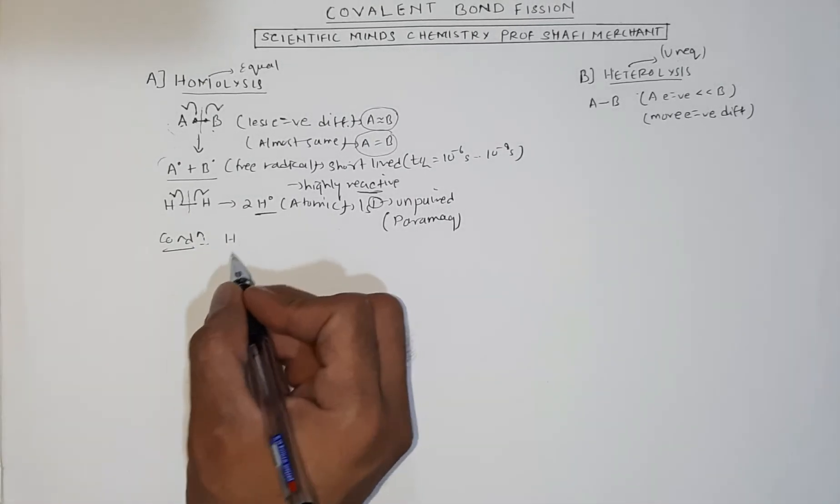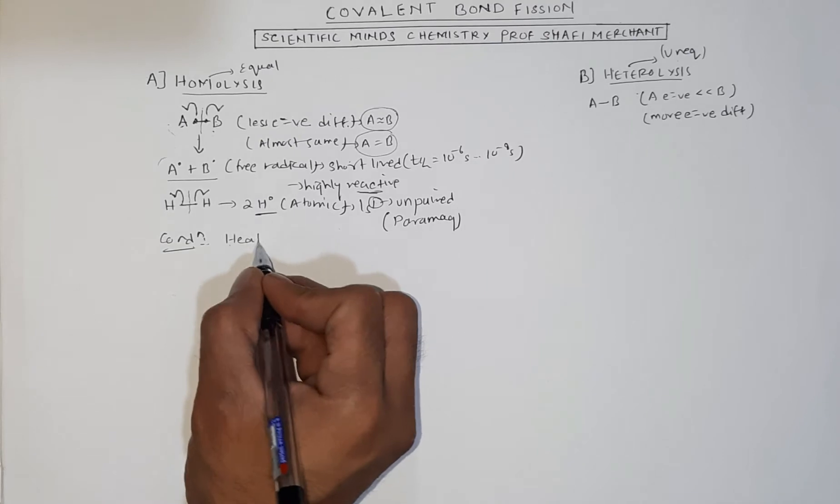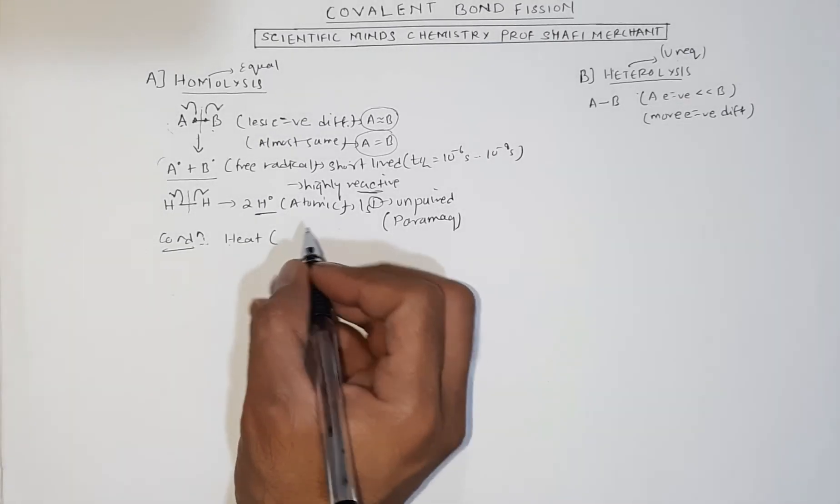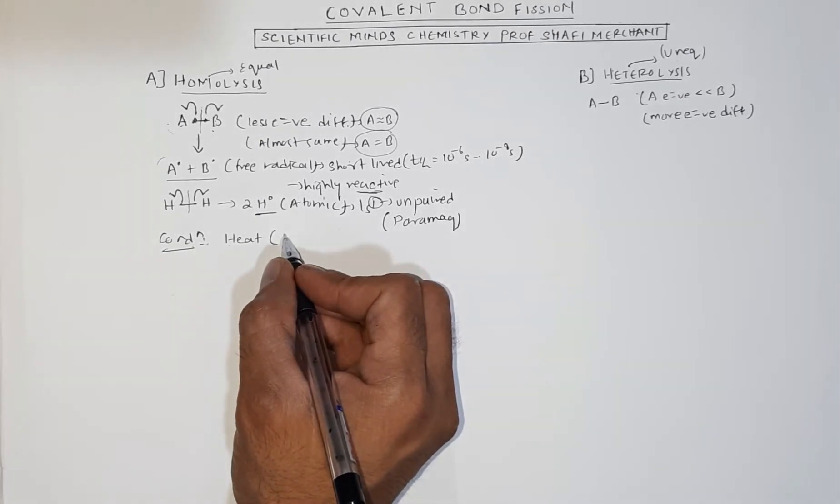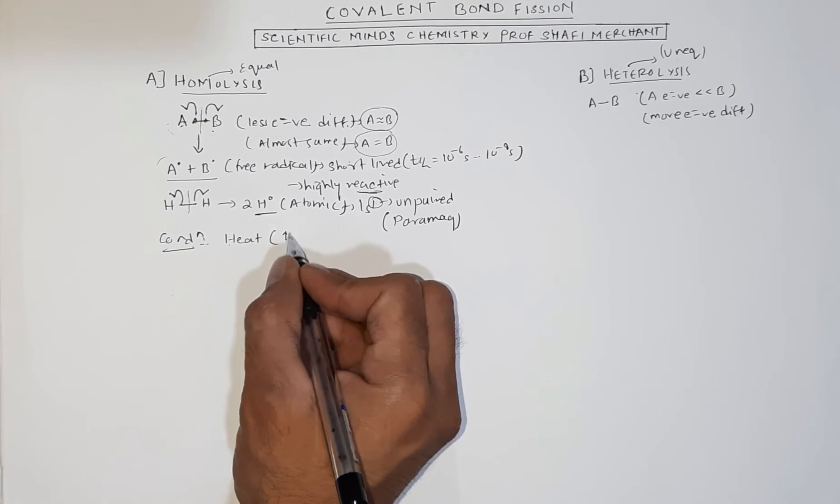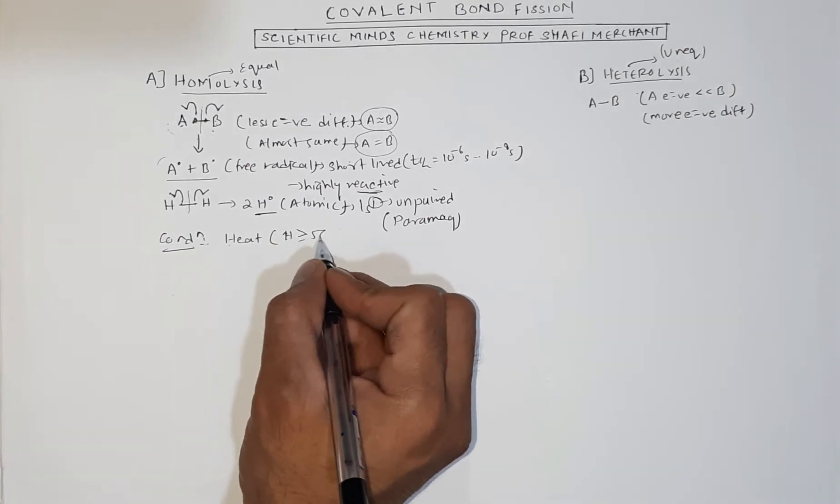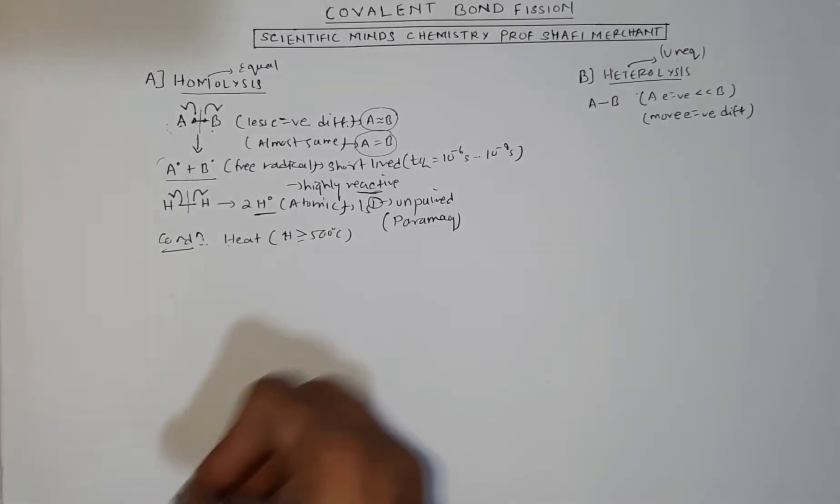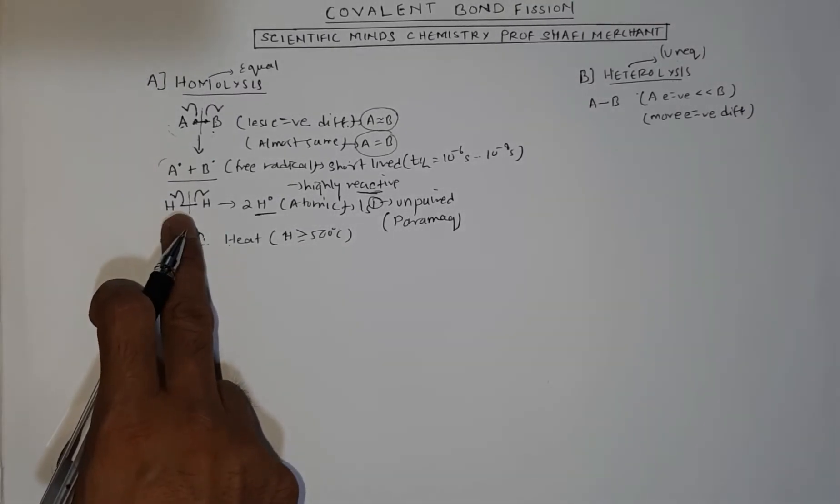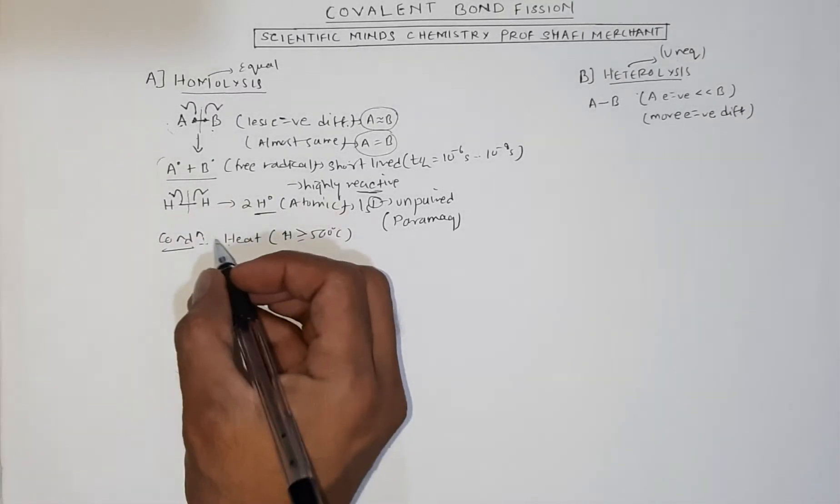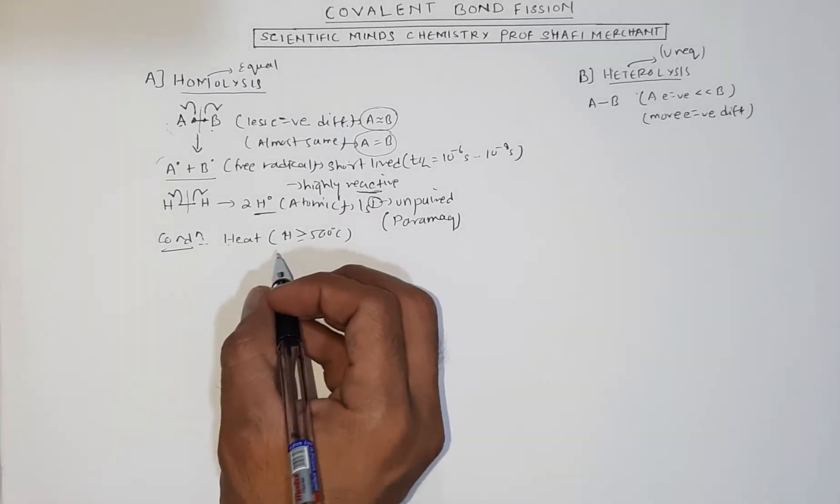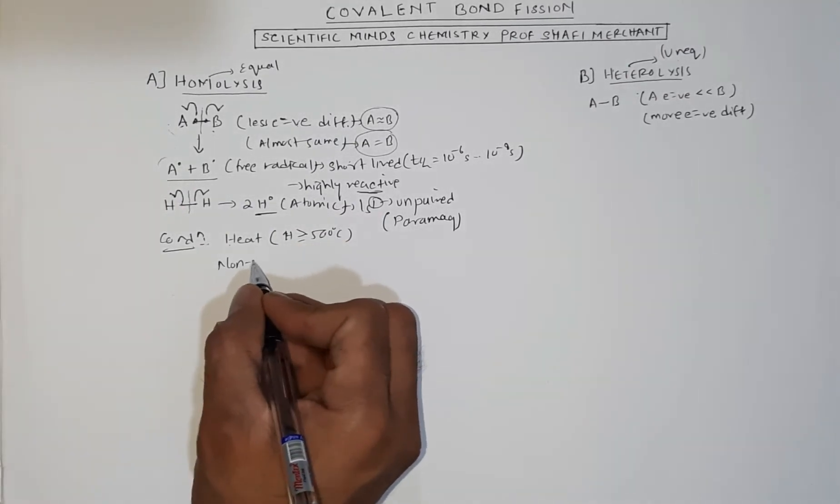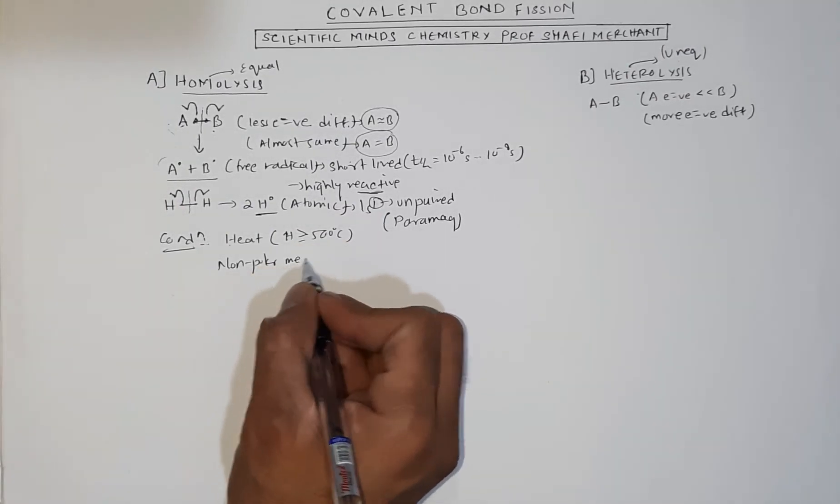You have to remember the application of heat. Many times in reactions you'll see heat is greater than or equal to 500 degree Celsius, 600, 700, 800. If you see this, it means homolysis will occur, equal breaking will occur. Second condition: